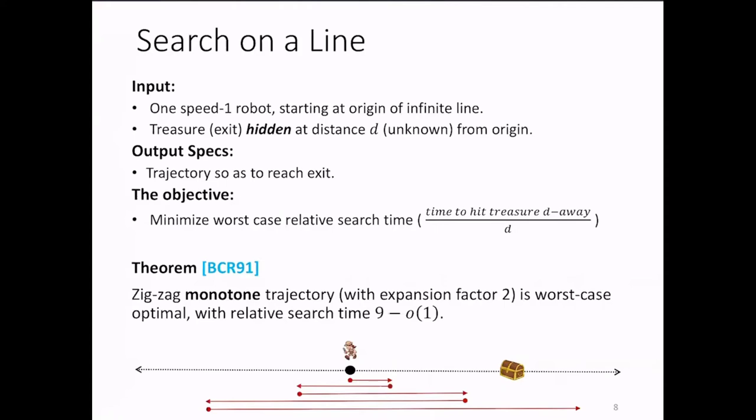The objective is to design a trajectory so as to minimize the worst-case relative time for finding the treasure. And when I say relatively, I mean with respect to the distance. A celebrated result of the same paper says that an optimal algorithm for this problem is to search in alternating directions, each time expanding the search space geometrically. What makes this algorithm monotone is that each time the searcher stops expanding the search space, she returns to the origin before expanding the search space again.